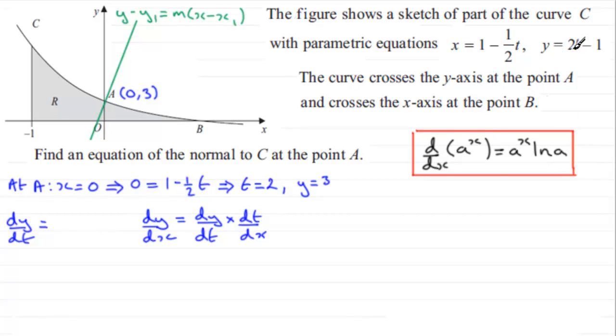For us here, if we differentiate 2 to the power t, then what we get back is 2 to the power t multiplied by the natural log of 2. The differential of 1, well that's 0. So that's dy by dt. Next we need to get dt by dx, but in order to do this we find dx by dt and then we invert it. So dx by dt, well differential of 1 is 0. Differential of minus a half t is equal to minus a half. Therefore, dt by dx equals minus 2.